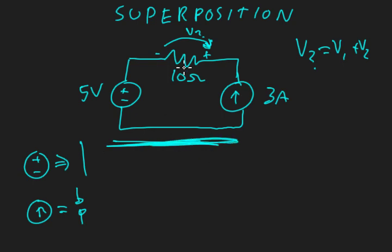So I'm going to split the circuits up using superposition. This circuit is equal to, considering the voltage source first in isolation, 5 volts. We have our resistor there, and the current source gets replaced with an open circuit. We're interested in V question mark.